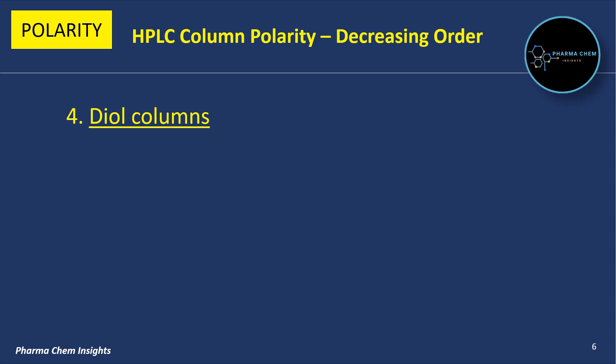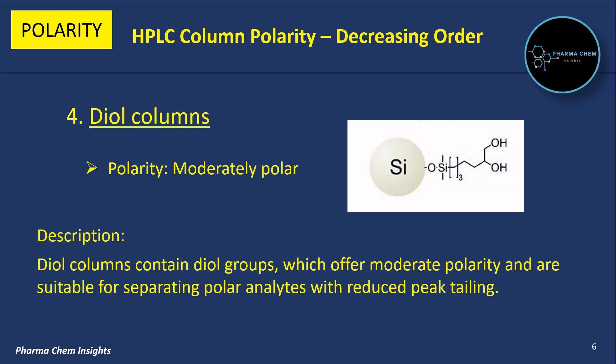Fourth is Diol columns. Their polarity is moderately polar. Diol columns contain diol groups — 'di' meaning two and 'ol' referring to alcohol groups, as you can see in the structure — which offer moderate polarity and are suitable for separating polar analytes with reduced peak tailing.